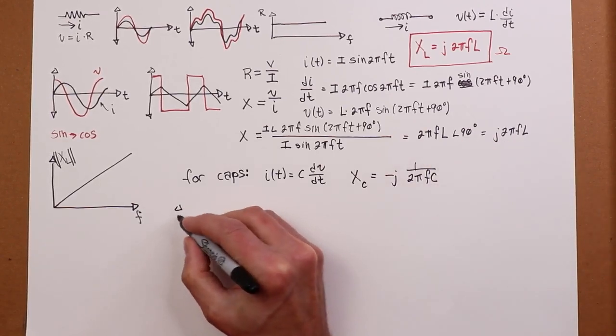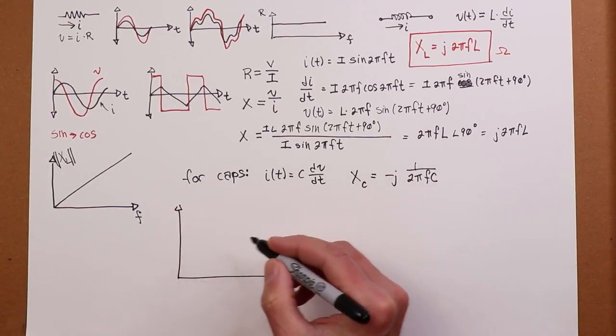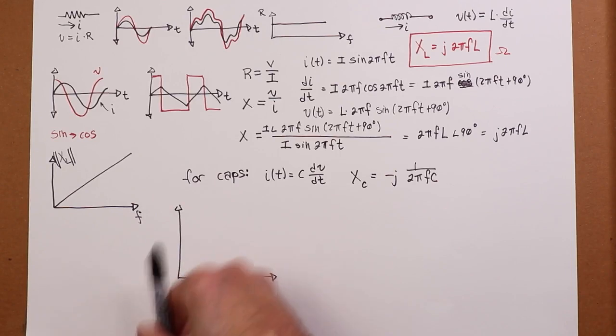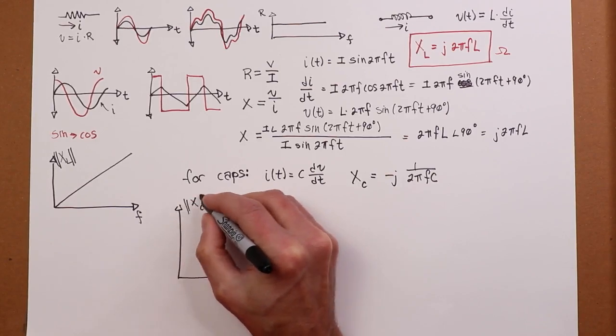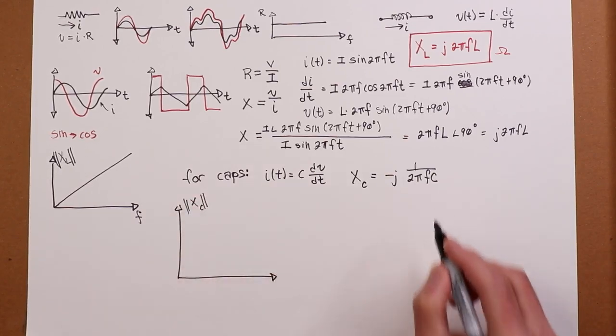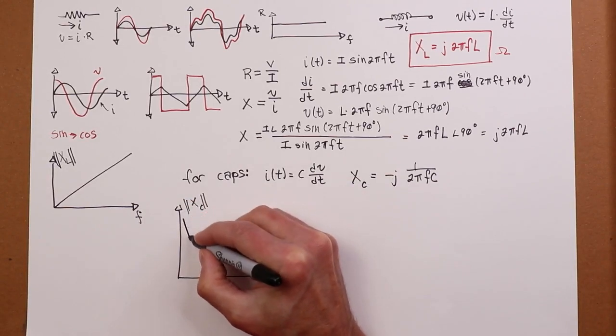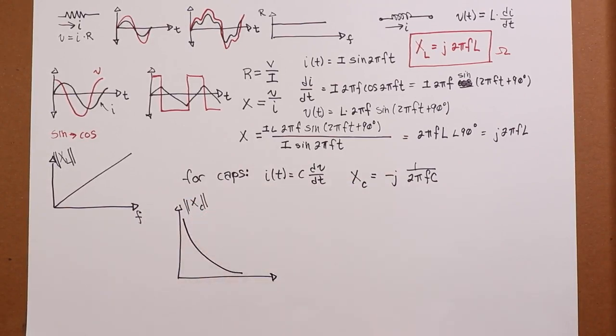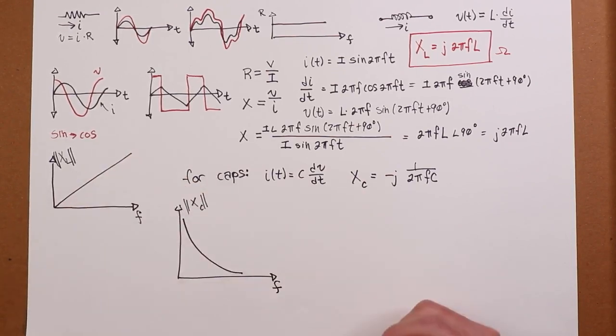So for the capacitor, again, I'm going to use a magnitude on this. I mean, it's really going down, but just so I can compare it directly, we're going to be talking about X sub C over here, magnitude of it. What we would see here is as frequency goes up, X sub C gets smaller, so I see something that goes like this. It dives down as frequency increases. So these are the ideal curves that you would get.